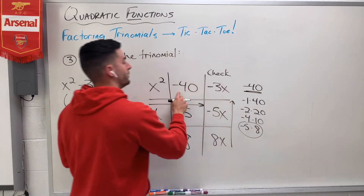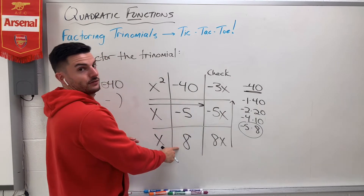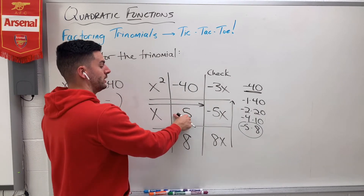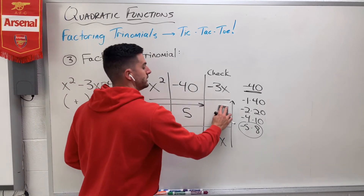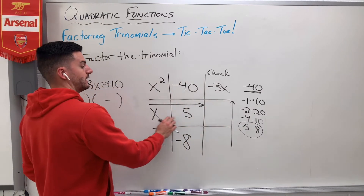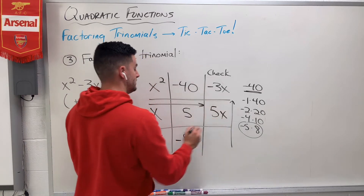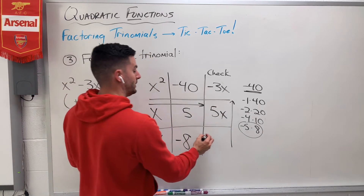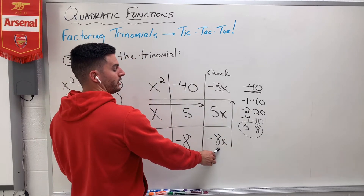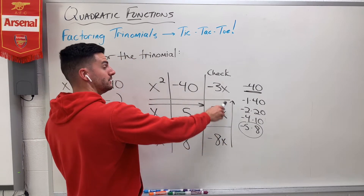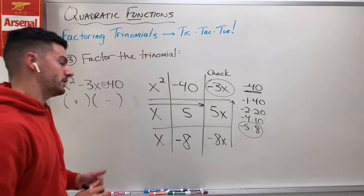Especially when we have a negative number here, it could be negative 5 and positive 8, or we can try flipping that around — positive 5 and negative 8. If I re-multiply, x times 5 gives me positive 5x, and x times negative 8 gives me negative 8x. When I add them, negative 8x plus 5x does give me negative 3x. So my check is complete and I got it.